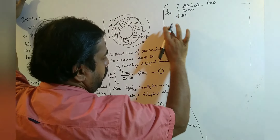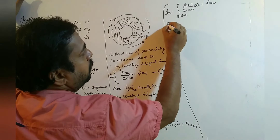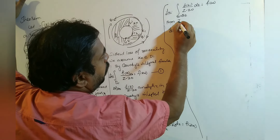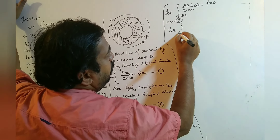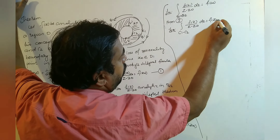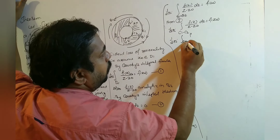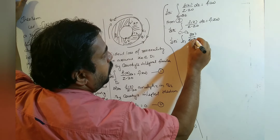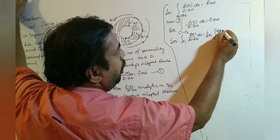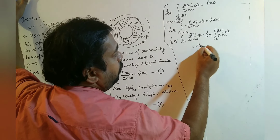Therefore f(z0) equals 1/(2πi) times the integral over C1 of f(z)/(z−z0)dz minus 1/(2πi) times the integral over C2 of f(z)/(z−z0)dz. This is the final result — the Cauchy integral formula for an annular region.